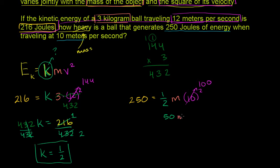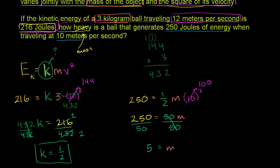To solve for mass, divide both sides by 50. On the right we get mass; on the left, 250 divided by 50 equals 5. So our mass is 5. If we track the units — 250 joules divided by meter squared per second squared — you actually do get kilograms. So the mass of the object is 5 kilograms.